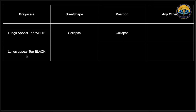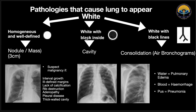Coming to pathologies of the lung: the lung may appear too white, too black, or there could be lung collapse. Pathologies causing the lung to appear white include homogeneous and well-defined opacification. If less than 3 cm, it is a nodule; if more than 3 cm, it is a mass. We should always be careful as these could be malignant, so we look for interval growth, ill-defined margins, calcification, rib destruction, associated lymphadenopathy, pleural disease, or thick-walled cavity.